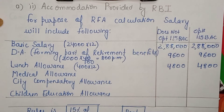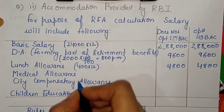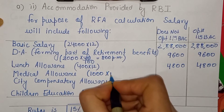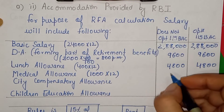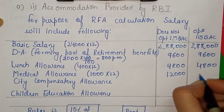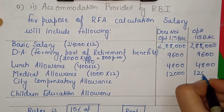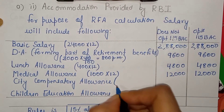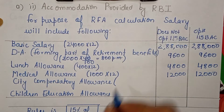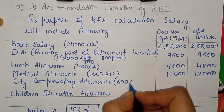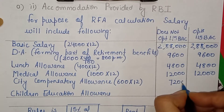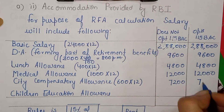Medical allowance: 1,000 per month × 12 = 12,000. City compensatory allowance: also fully taxable, 600 per month × 12 = 7,200 — same for both cases.